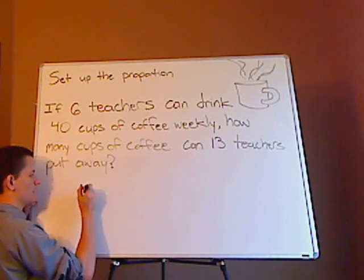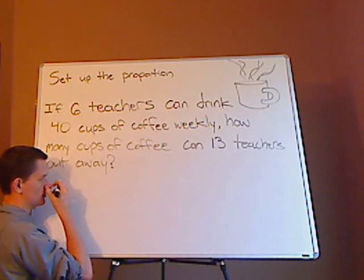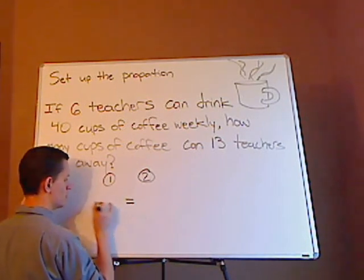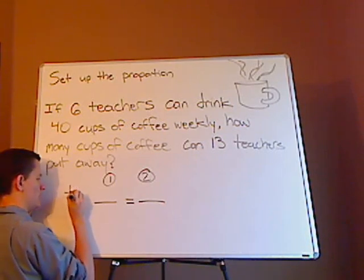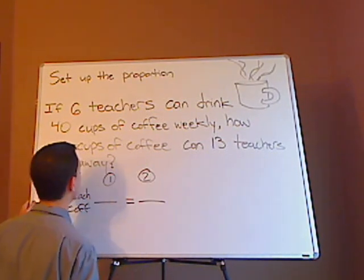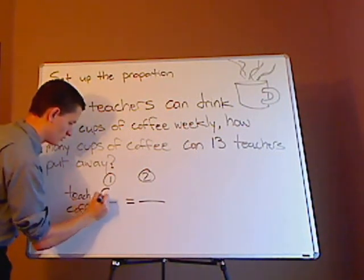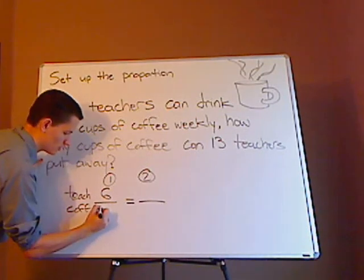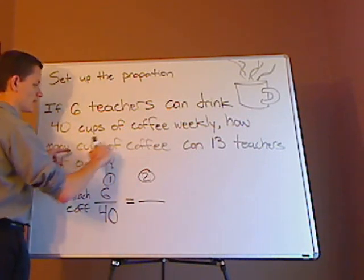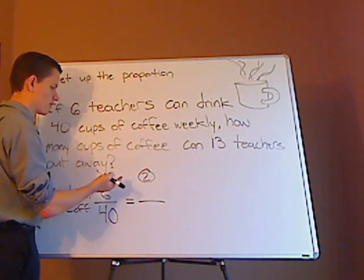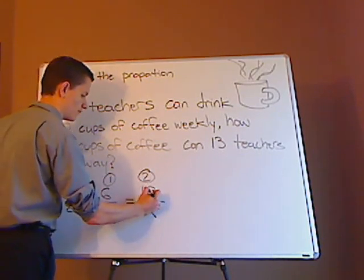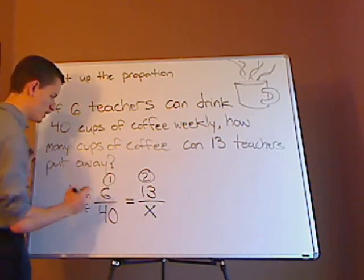I'm going to set it up two ways, and I'll show you a way that you can check yourself — because maybe you're doing a multiple choice test. The key thing is to line up everything. Six teachers is associated with 40 cups of coffee. For your second ratio, you don't know the cups of coffee, so that's your X, lining up with coffee. And then you have 13 teachers. Make sure just everything is lined up.